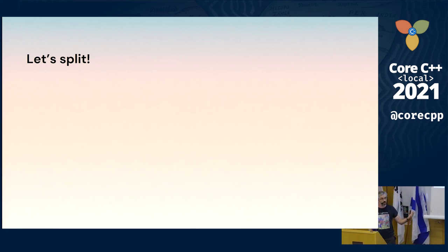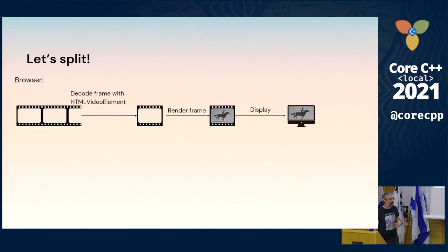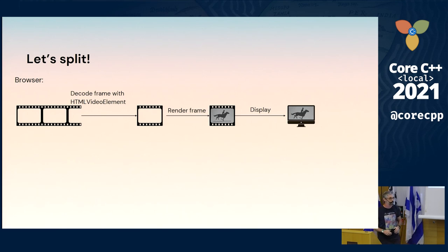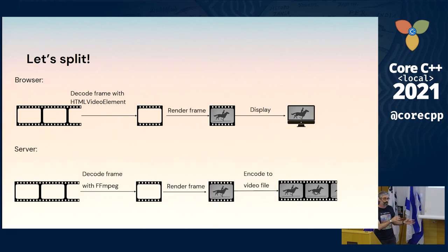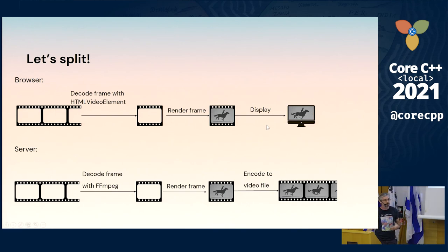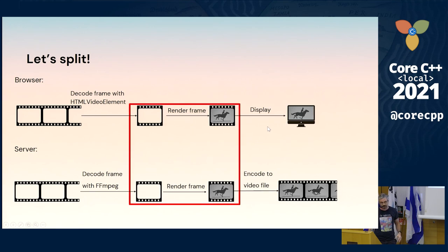So we need one flow for playing and one for encoding — let's run them separately. Playing has to be done in the browser in real time, but it's okay to occasionally skip a frame. So let's play in the browser using an HTML video element: decode a frame, render a frame, display a frame. When it skips, it skips. When we encode, we'll send a request to the server. The server will decode each and every frame no matter how much time it takes, render a frame, and encode the result to a video file. Everything is okay, except this middle part — this duplication — isn't great at all.